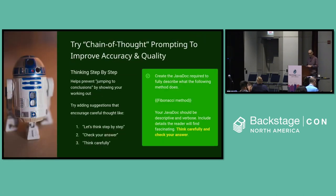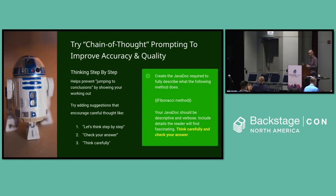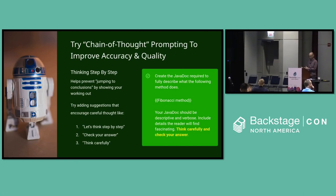Next, think about chain of thought prompting. This is where you encourage the AI to take a breath, think step by step, and work through the problem slowly. By introducing these sorts of hints into your prompts, you'd be very surprised at how successful that is at making the AI more accurate — remember we said inaccuracy was one of the problems. In this particular example: 'Create a Java doc. Here's the method. Go and write it for me, but think carefully and check your answer.'